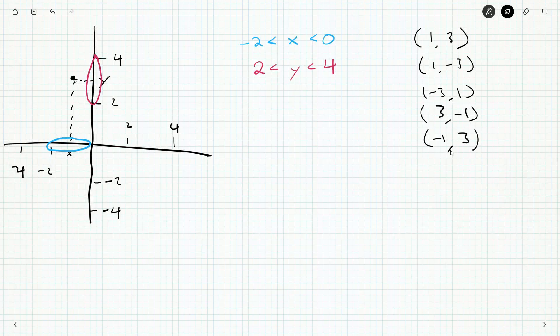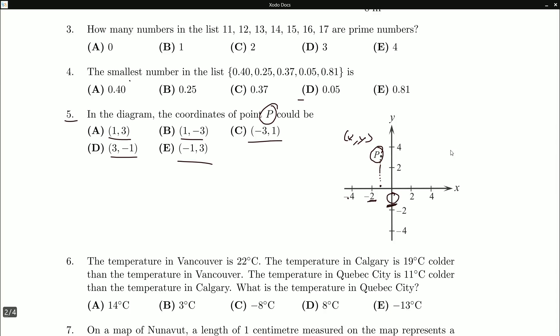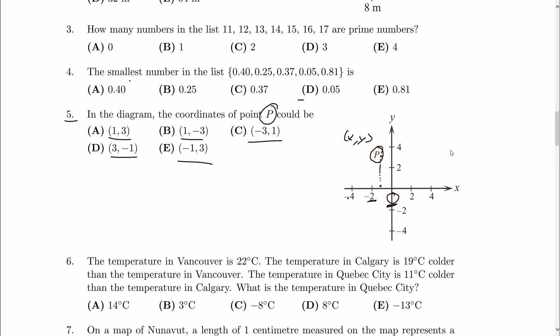So if we look here, there's only 2 that have a y-value between 2 and 4, but even stronger, there's only one of them that has an x-value between negative 2 and 0. And that says negative 1 here, so our answer should be E. So that's a way to try and find these—let's narrow some things down.